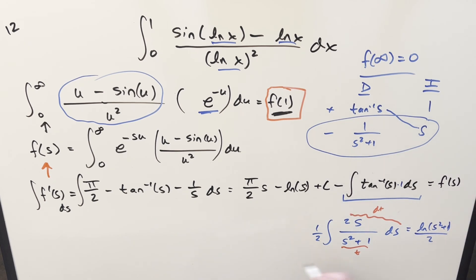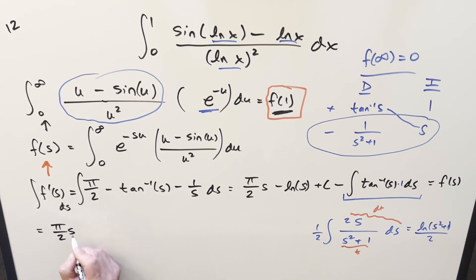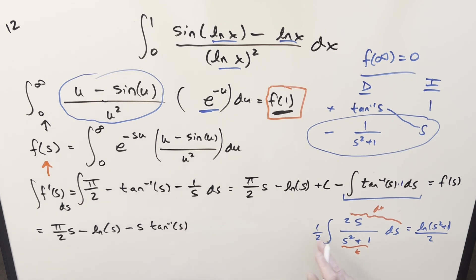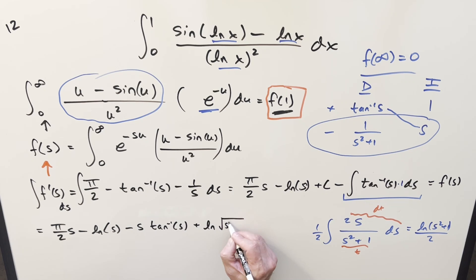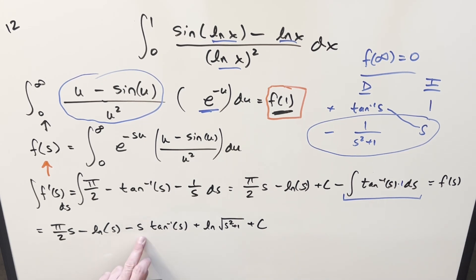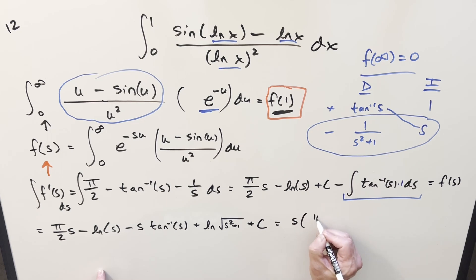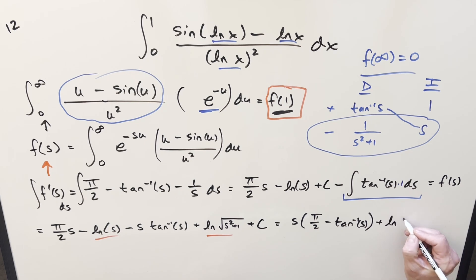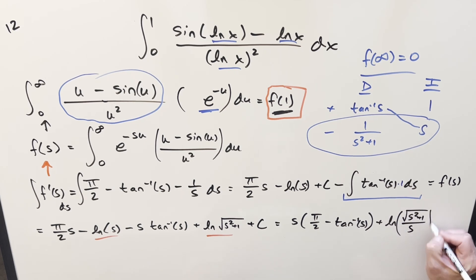Putting it all together and distributing the minus sign: f(s) = (π/2)s - ln s - s·arctan(s) + (1/2)·ln(s² + 1) + c. Factoring s from the first and third terms gives s·(π/2 - arctan s). Using log properties to combine the log terms gives ln(√(s² + 1) / s). So f(s) = s·(π/2 - arctan s) + ln(√(s² + 1) / s) + c.